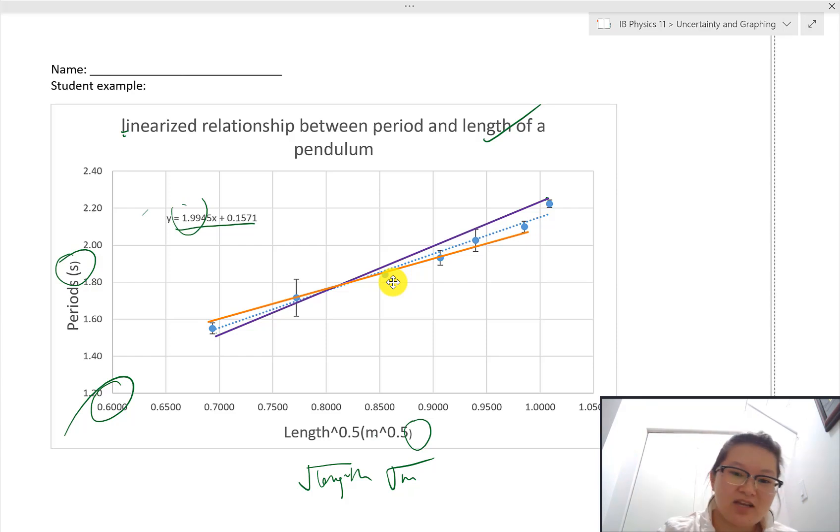So I have an explanation. I can be fair to all of these data points. The next steps, of course, I would take is find the minimum slope, find the maximum slope, and then eventually do my uncertainty calculations for slope. Exactly what we did above.